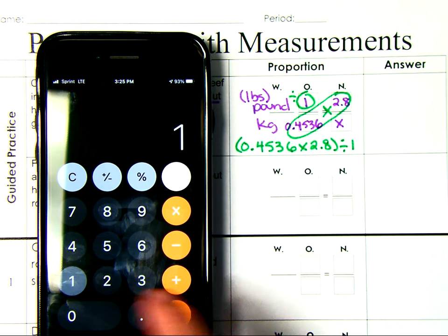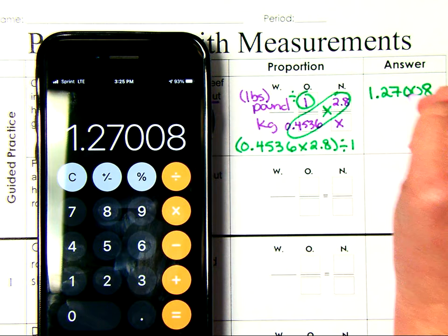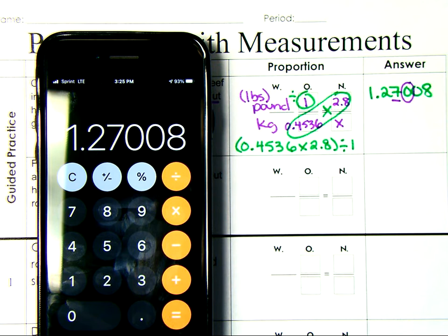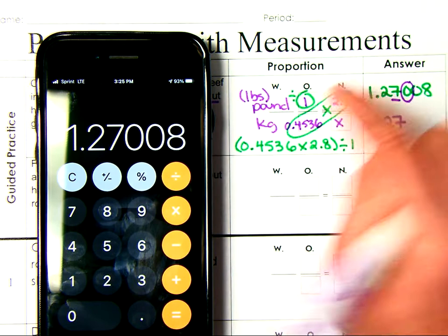0.4536 times 2.8 gives me a product of 1.2708. And anything divided by 1, of course, is itself. So if we wrote the answer 1.2708, just like yesterday, we're going to round to the nearest hundredths. So the tenths, this is the hundredths place. You only have to look at the number in the thousandths place to estimate. Four or less, we're going to let that rest. Five or more, we're going to add one more. So our final answer is going to be 1.27. And don't forget your units, it's kilograms.